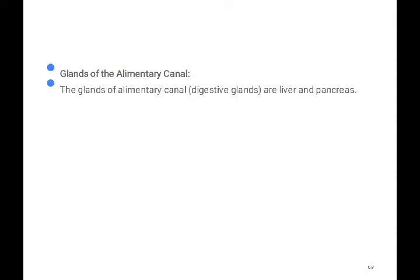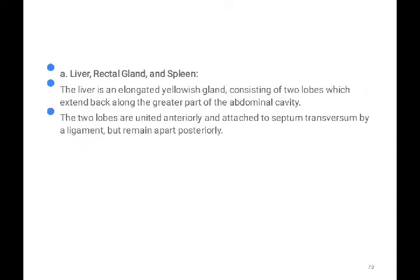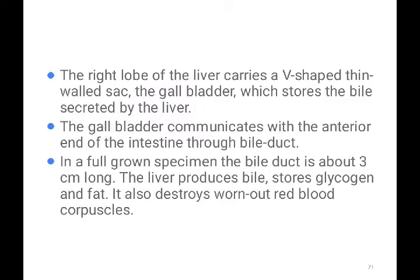The digestive glands of the alimentary canal are the liver and pancreas. The liver is an elongated yellowish gland consisting of two lobes that extend backward along the greater part of the abdominal cavity. The two lobes unite anteriorly and are attached to the septum transversum by a ligament. The right lobe of the liver carries a V-shaped gallbladder. The gallbladder stores bile secreted by the liver and communicates with the anterior end of the intestine through the bile duct — about three centimeters in full-grown specimens. The liver also stores glycogen and fat.